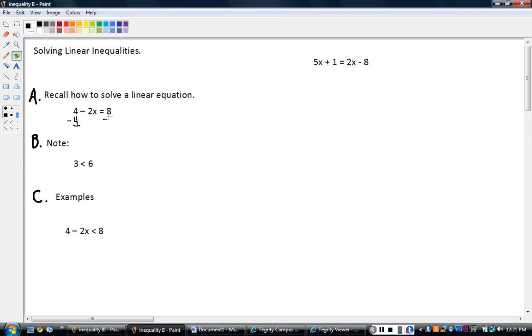I subtract 4 from both sides. 4 minus 4 is 0, leaving just the negative 2x. I'm going to write it over here. Negative 2x equals, and on the right hand side, 8 minus 4 is 4.